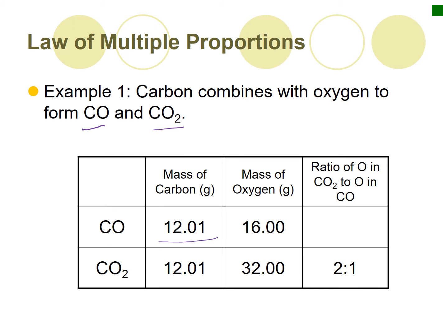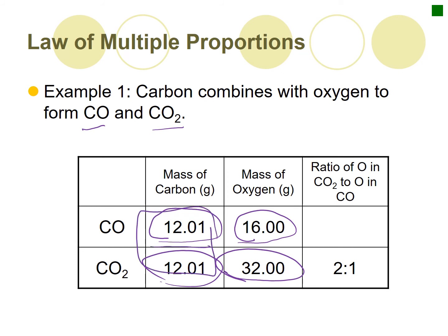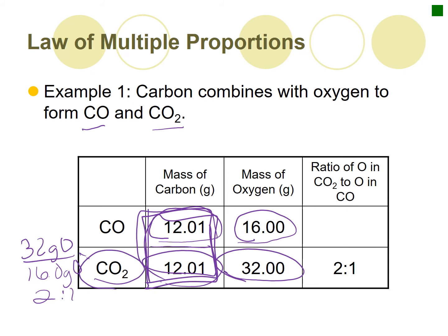Looking at mass by carbon to oxygen, we have 12 to 16 for CO, and 12 to 32 for CO2. If we keep the carbon the same and compare the oxygens, we have 32 grams of oxygen versus 16 grams of oxygen for the previous compound. When you divide that out, you get a 2 to 1 ratio. So CO2 has 2 times the mass contribution from oxygen compared to CO, for the same amount of carbon.